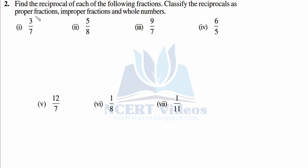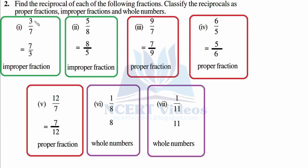The first one is 3/7 — flip it, so it becomes 7/3. It is an improper fraction because the numerator is greater than the denominator. Second: 5/8 — flip it to 8/5. It is again improper because the numerator is greater than the denominator.